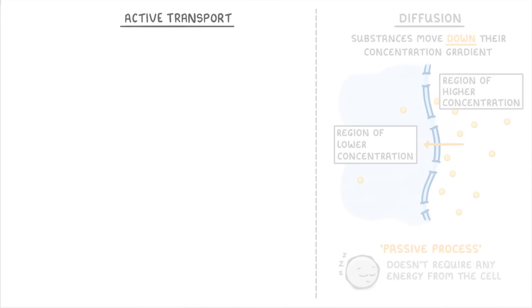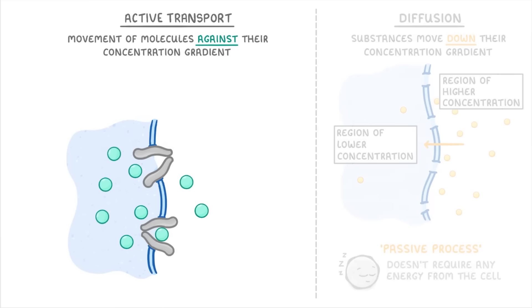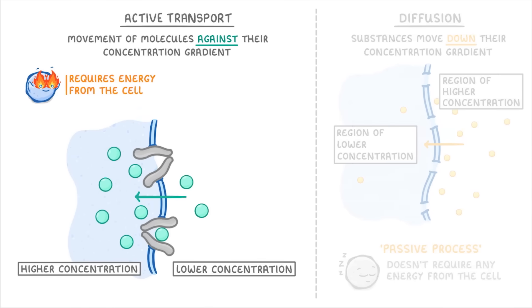Active transport, on the other hand, is the movement of molecules against their concentration gradients. So, from an area of lower concentration to an area of higher concentration. You can think of this more like water moving uphill – it won't happen by itself, and instead requires energy from the cell. Or in other words, it's an active process.